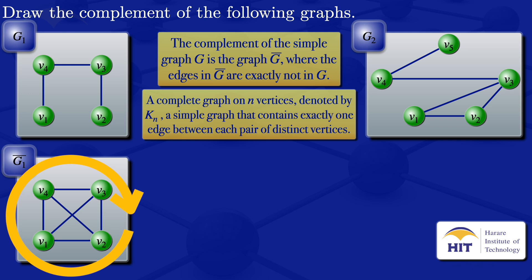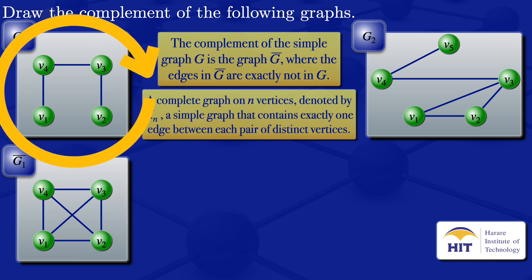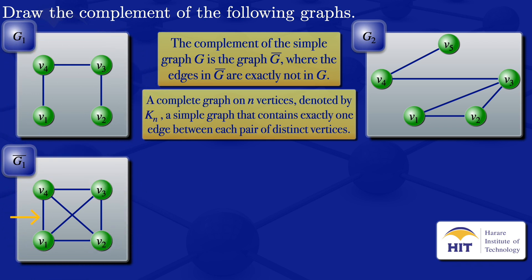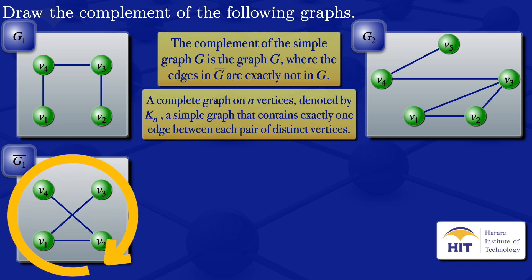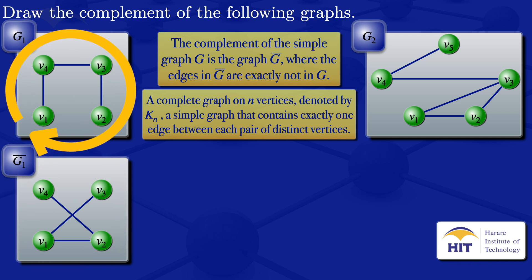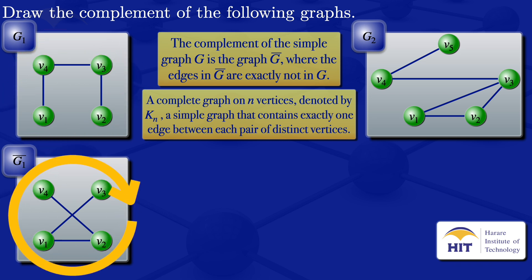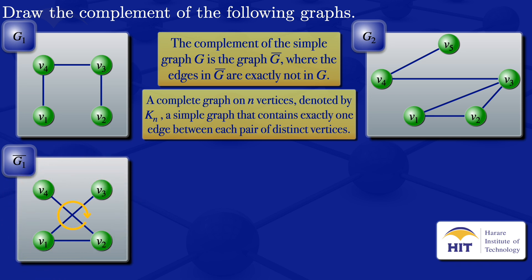From this complete graph, I will then go on and remove the edges which are in graph G1. So I will remove this edge, remove this edge, remove this edge. What we are having here now are edges that are not in this graph. So by definition, that's the complement — this is the complement of the graph G1.